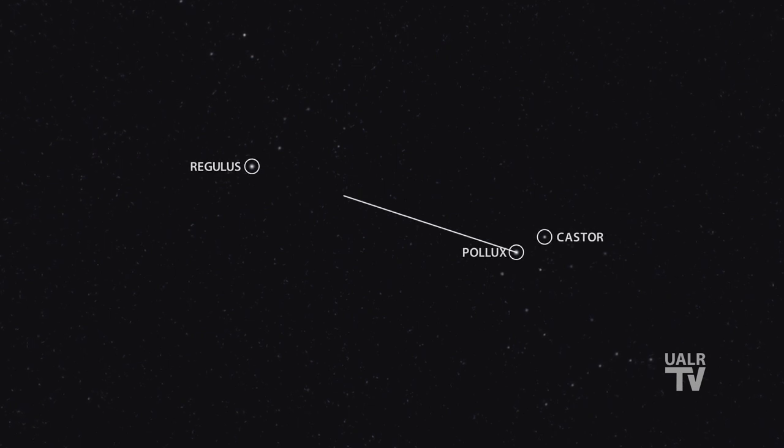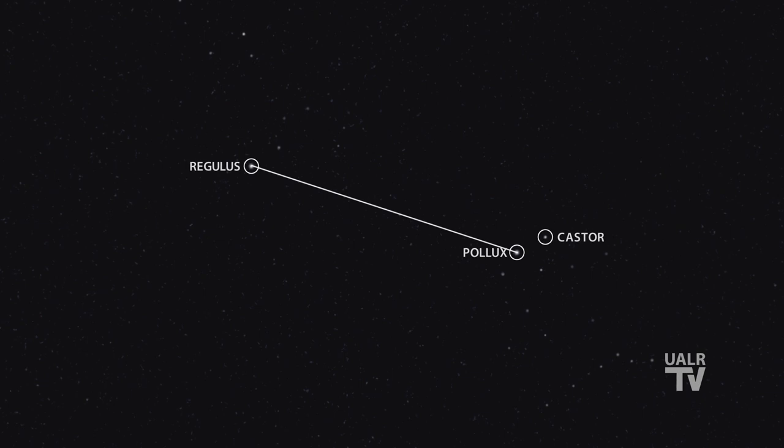Find the stars of Gemini, Castor and Pollux. Castor is the star that's on the right, or west, and Pollux is the star on the left, or east. Now once you've found these two stars, I want you to locate the bright star Regulus, the brightest star in the constellation of Leo, and which is located east of Gemini. If you draw an imaginary line from Pollux to Regulus, then the beehive is located about halfway in between the two.